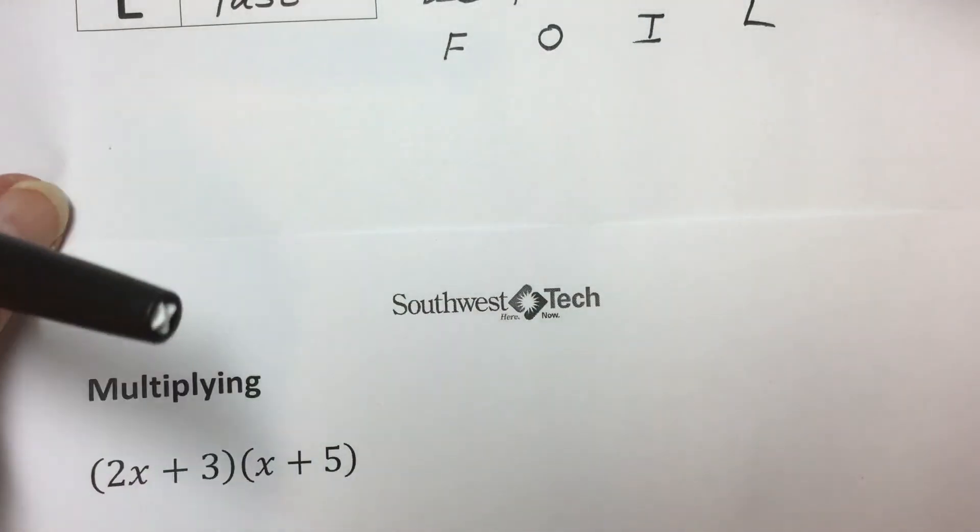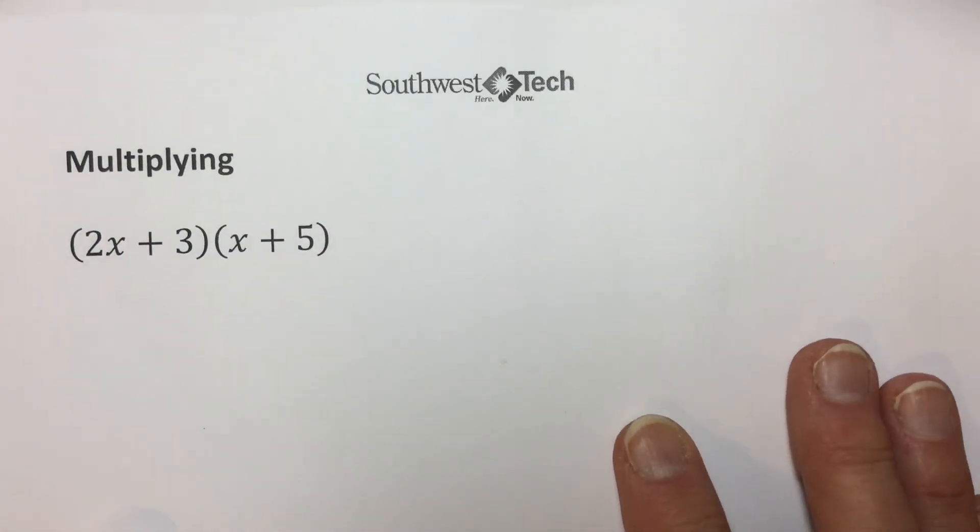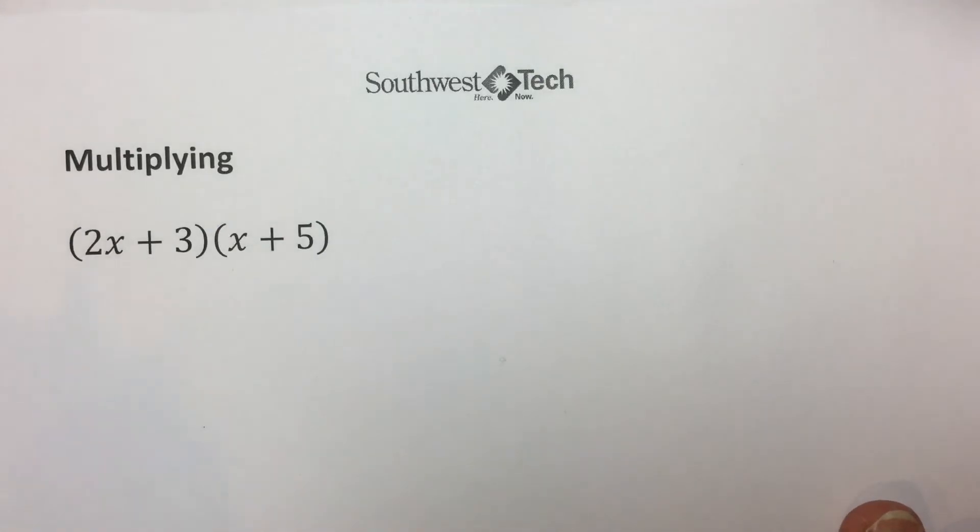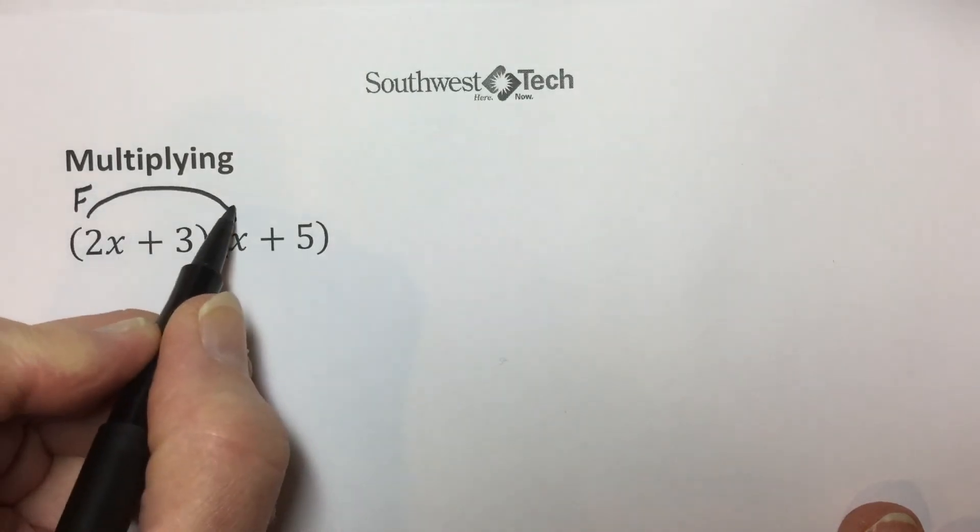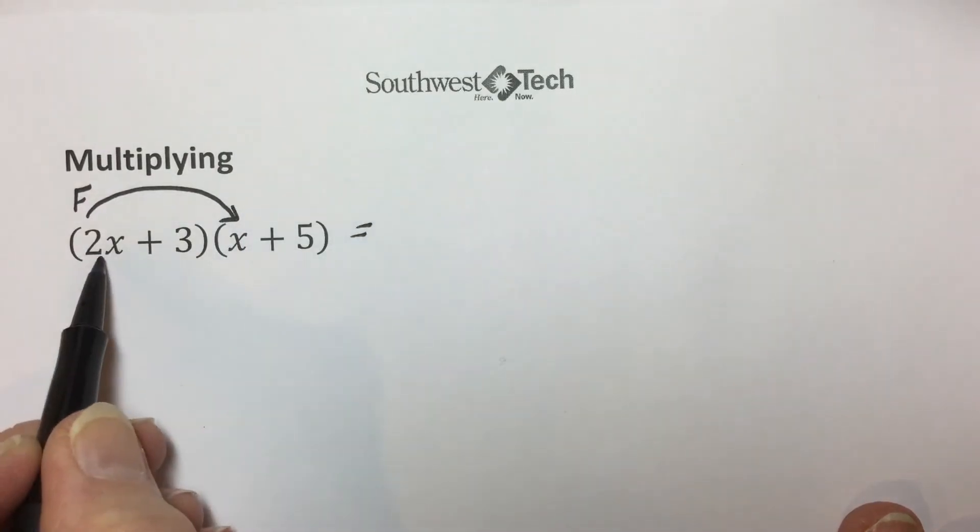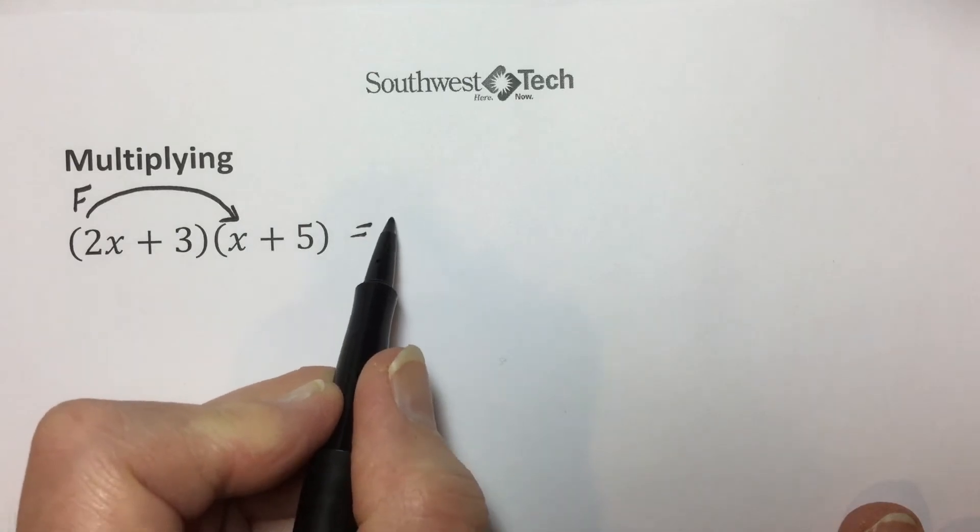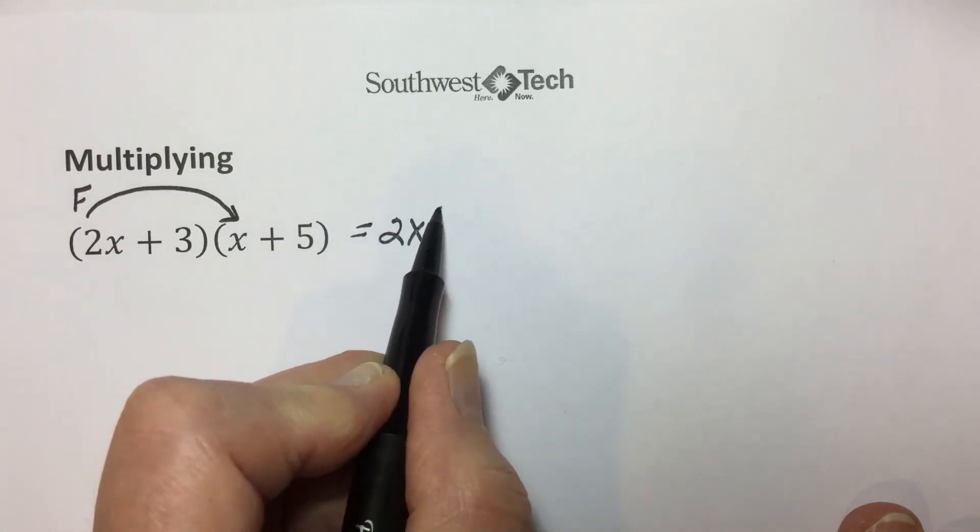Let's take a look then using the FOIL method on a couple of examples. Multiplying these binomials, I'm going to begin with first terms multiplied together. 2X times X is 2X to the power of 2.